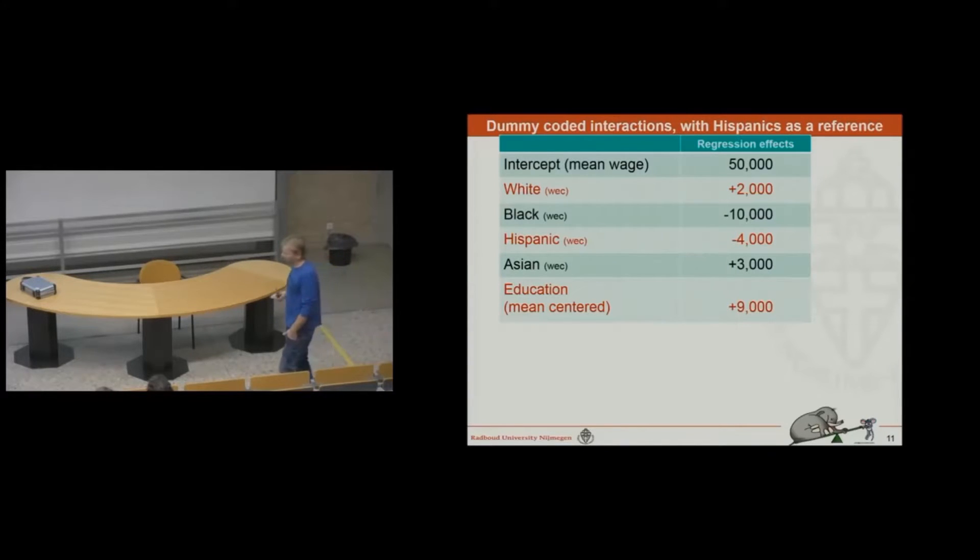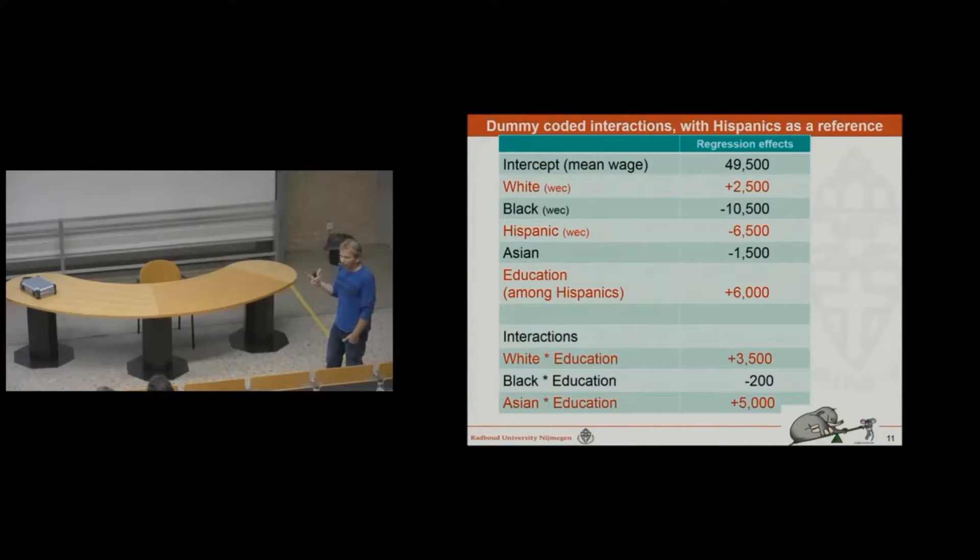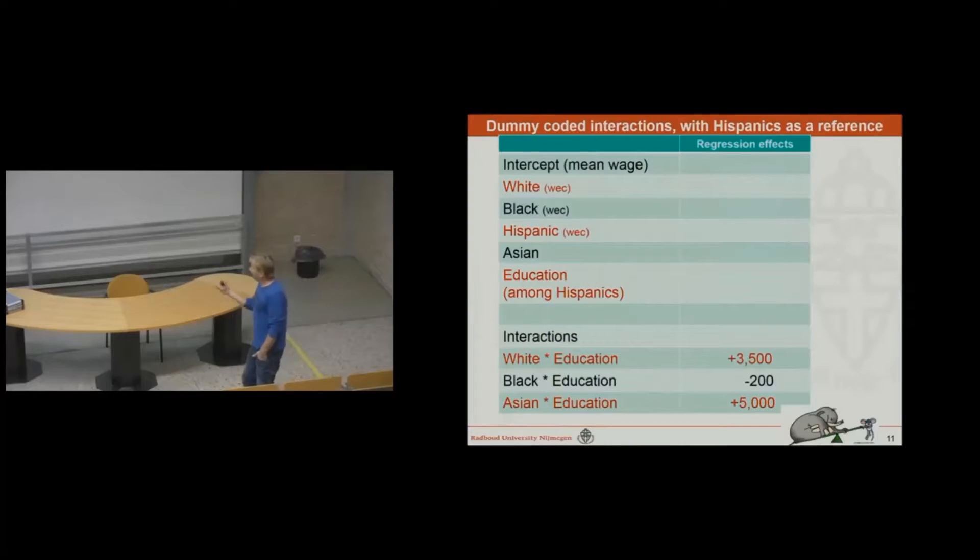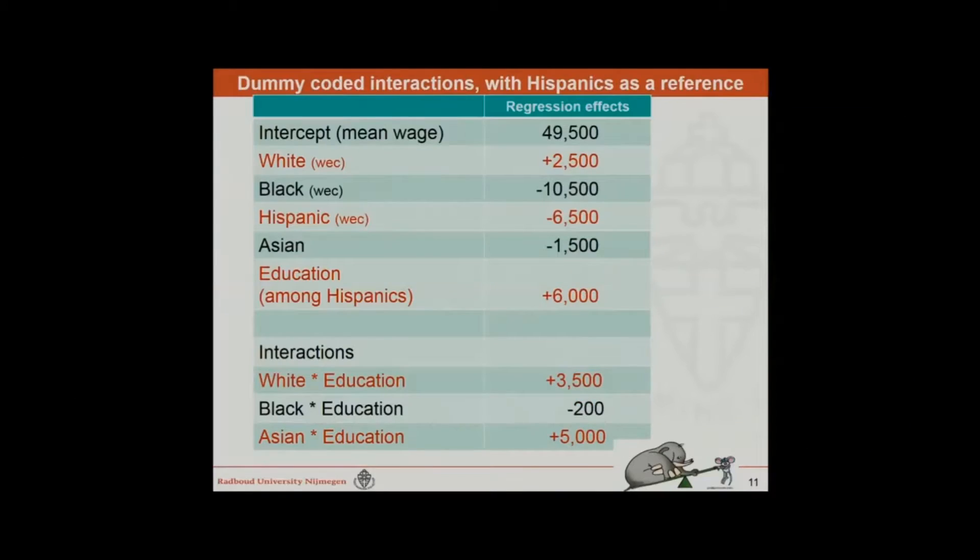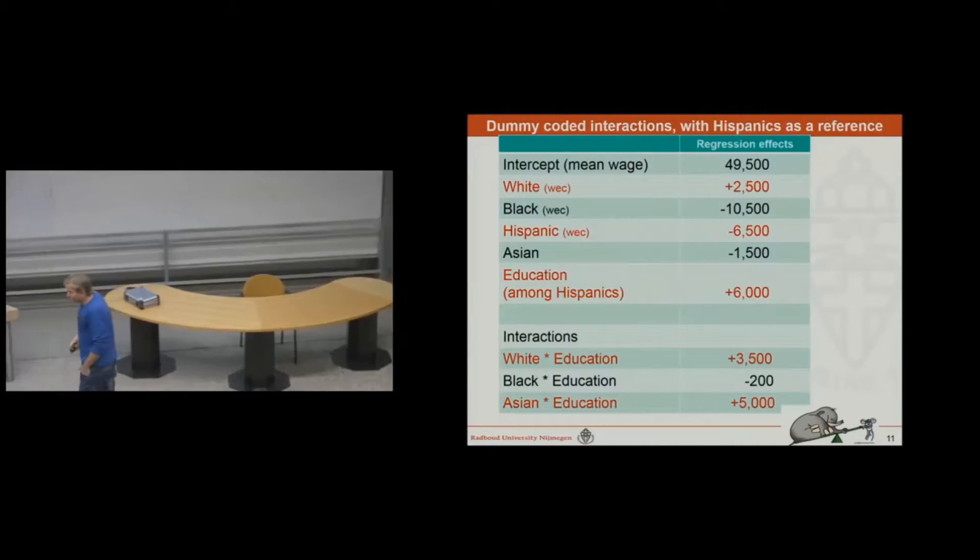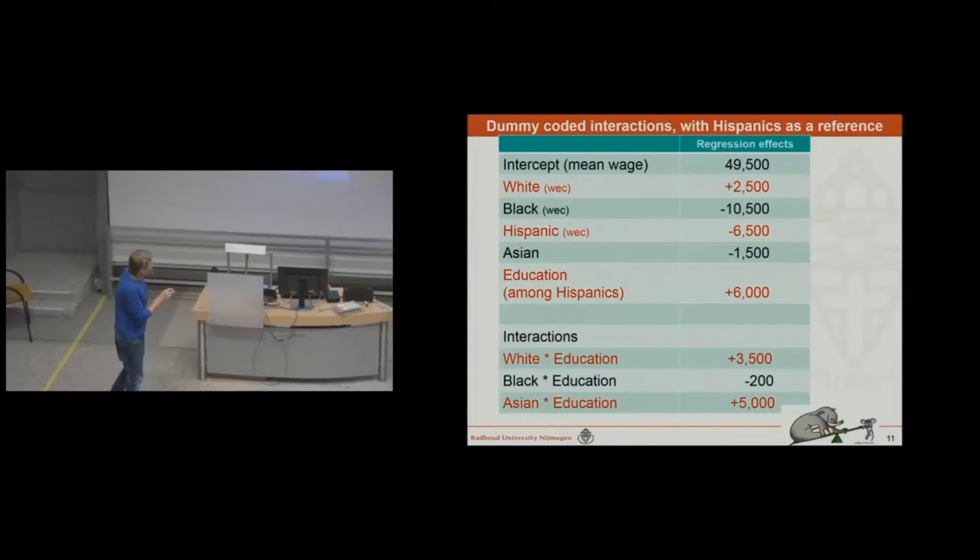But now, and that is something that students find very difficult to understand when they are confronted with it the first time. If we include our so-called interaction effects, all things are getting quite blurred and all things change. All the numbers that blink now are the numbers that have changed. For instance, the educational effect that was nine grand now changed to six grand. And I have to explain to the students how did that come about. So, the educational effect over here of six grand is the effect among Hispanics.